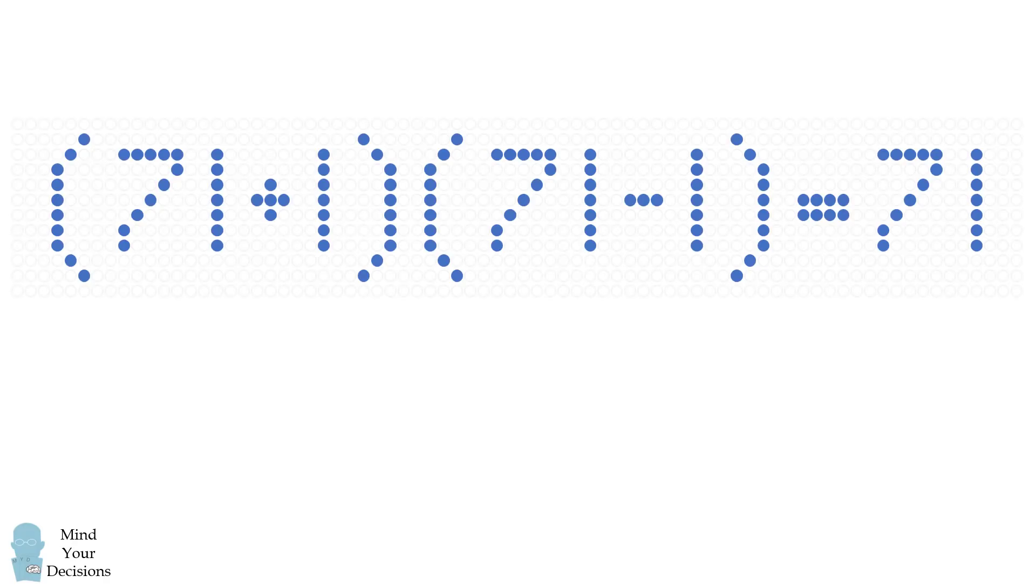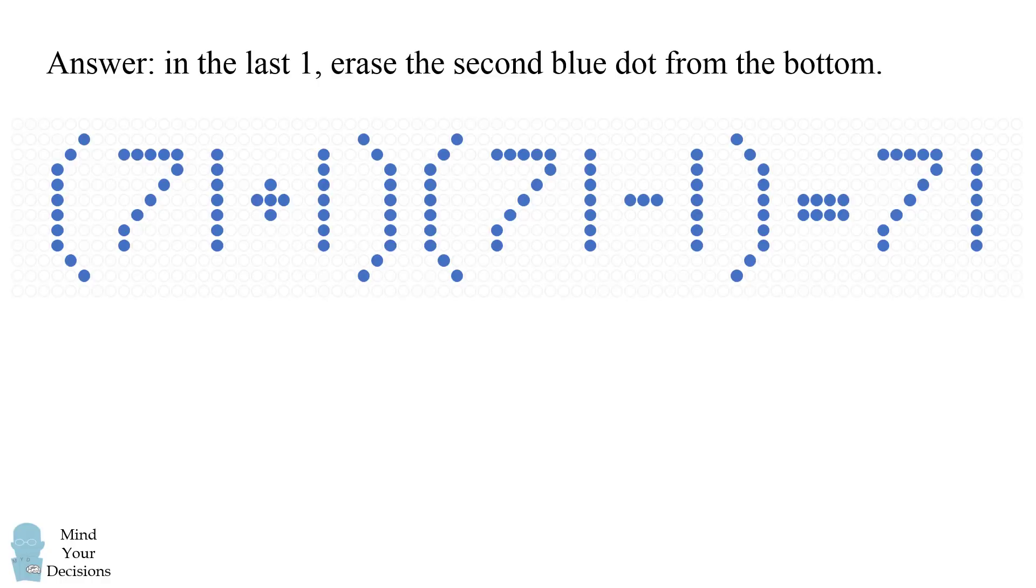So how can we make this a valid equation? The surprising answer is that in the very last digit of 1 erase the second blue dot from the bottom.